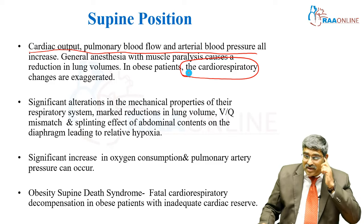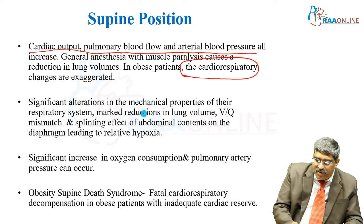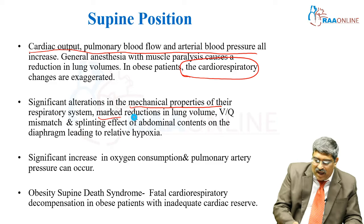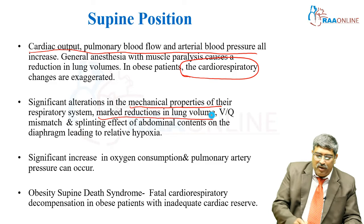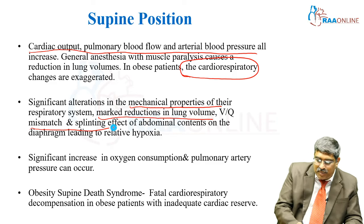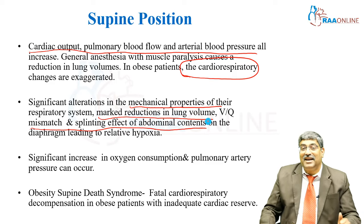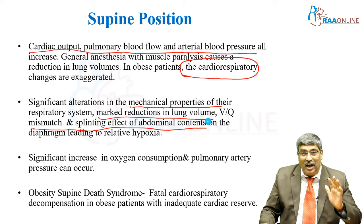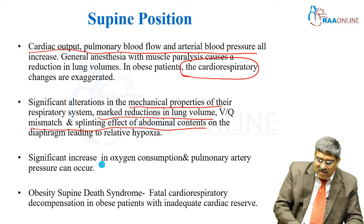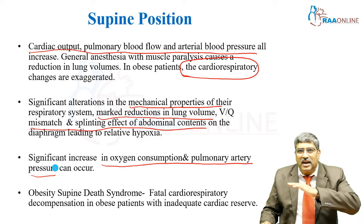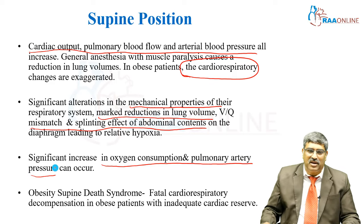There is significant alteration in the mechanical properties of the respiratory system, marked reduction in lung volume, V/Q mismatch, and the splinting effect of abdominal contents can lead to relative hypoxia. There can also be significant increase in oxygen consumption and pulmonary artery pressure — all of this can happen in the supine position.